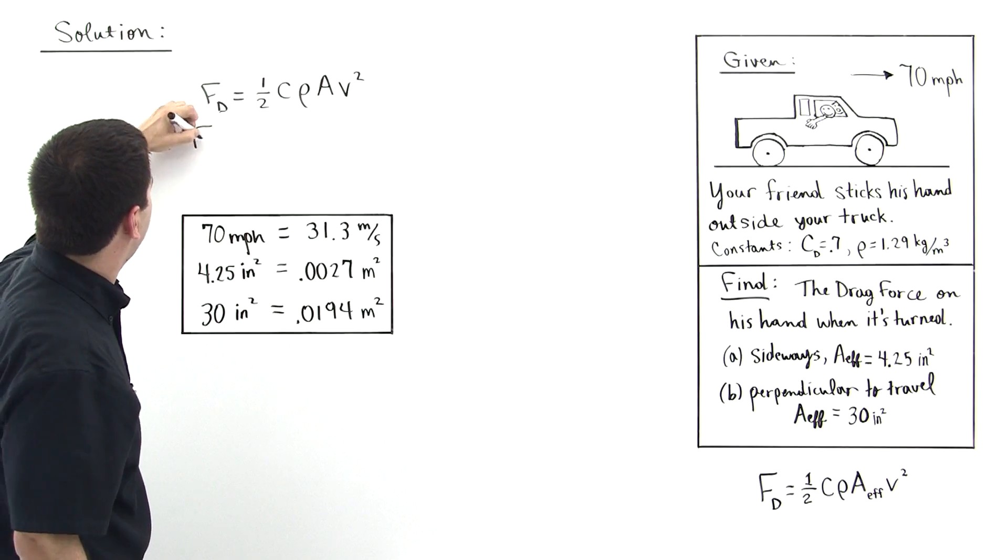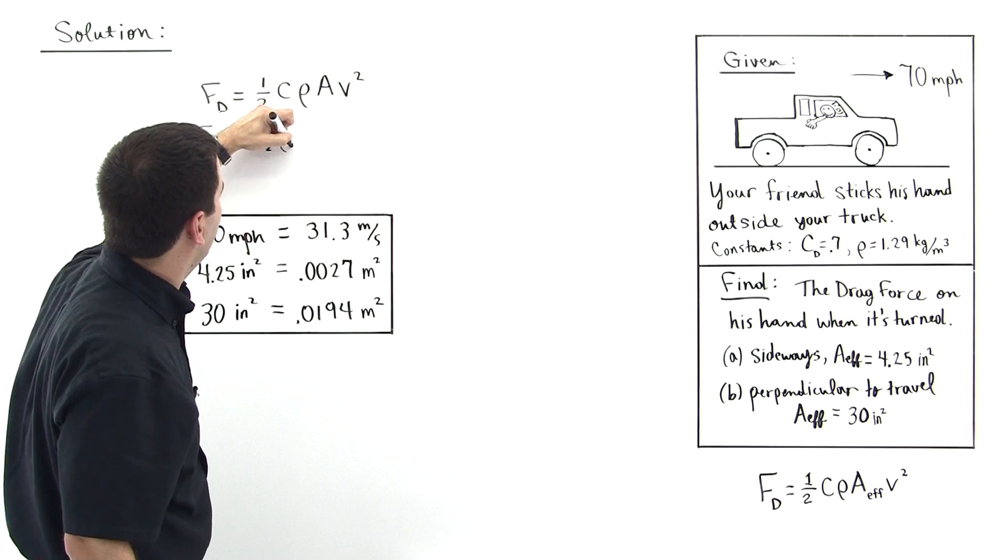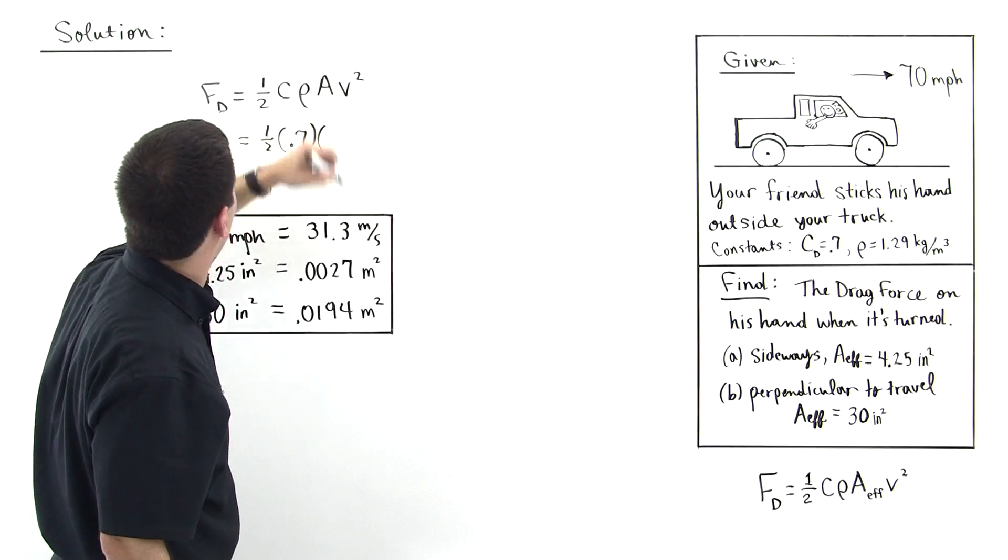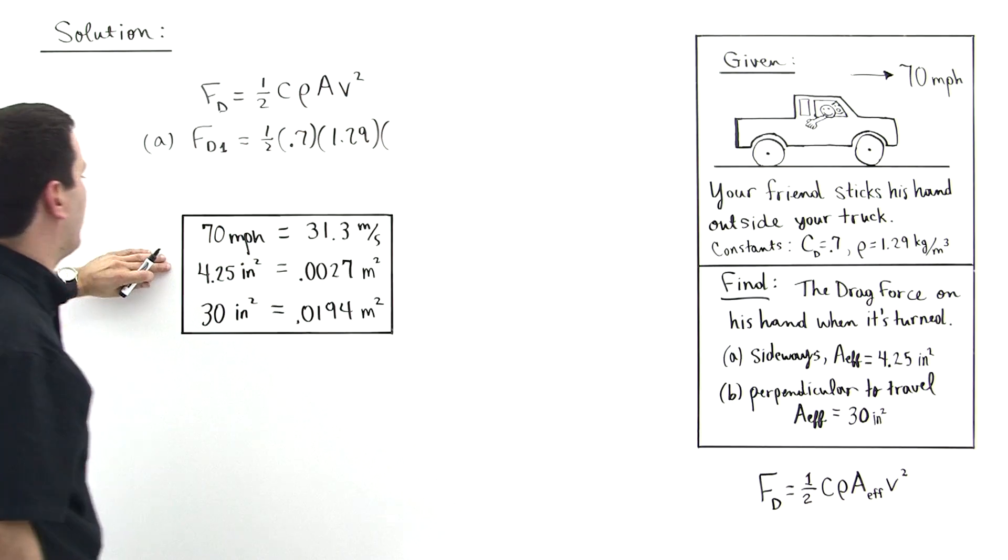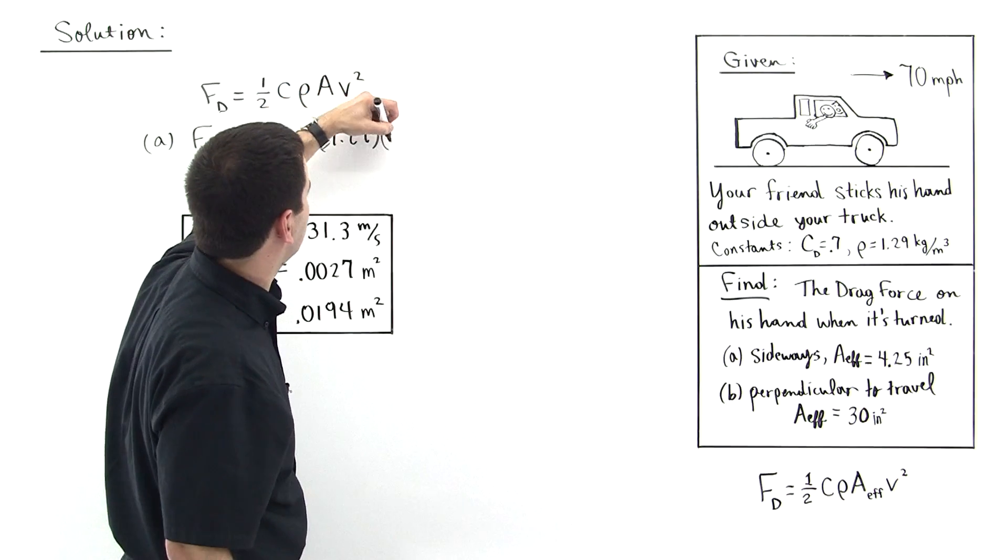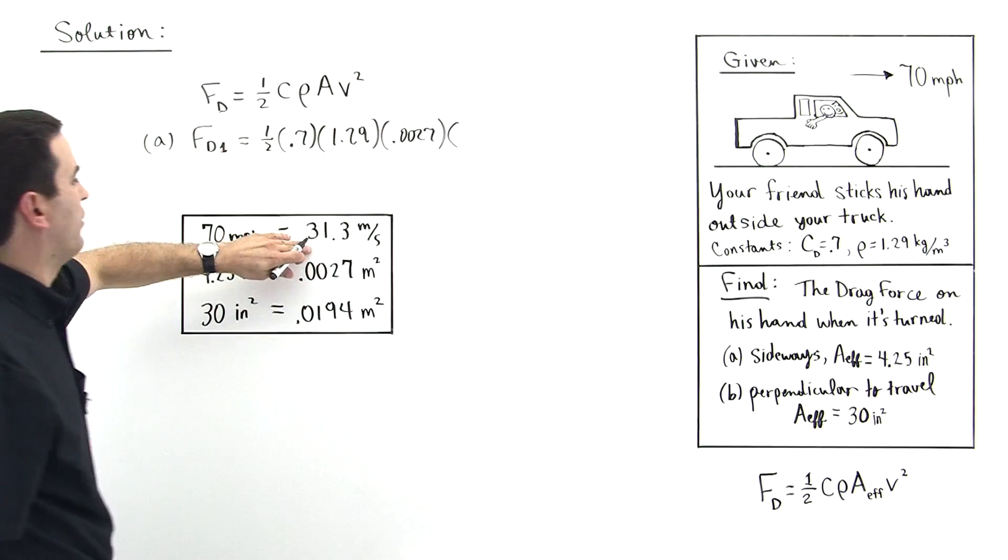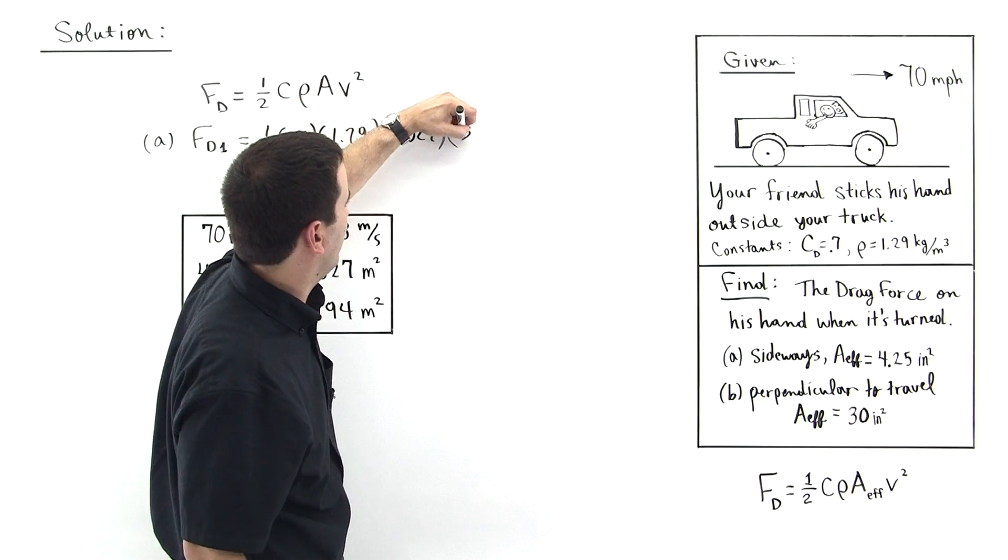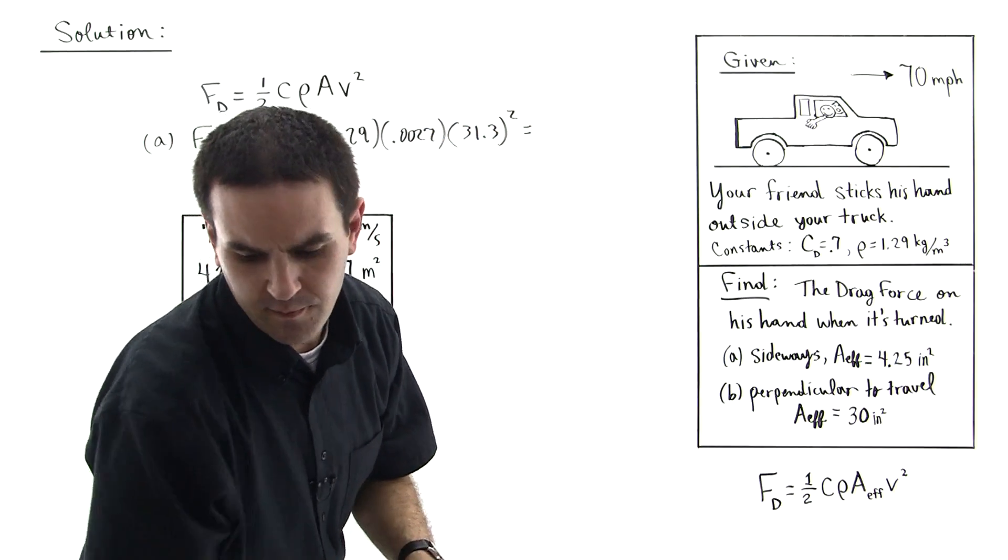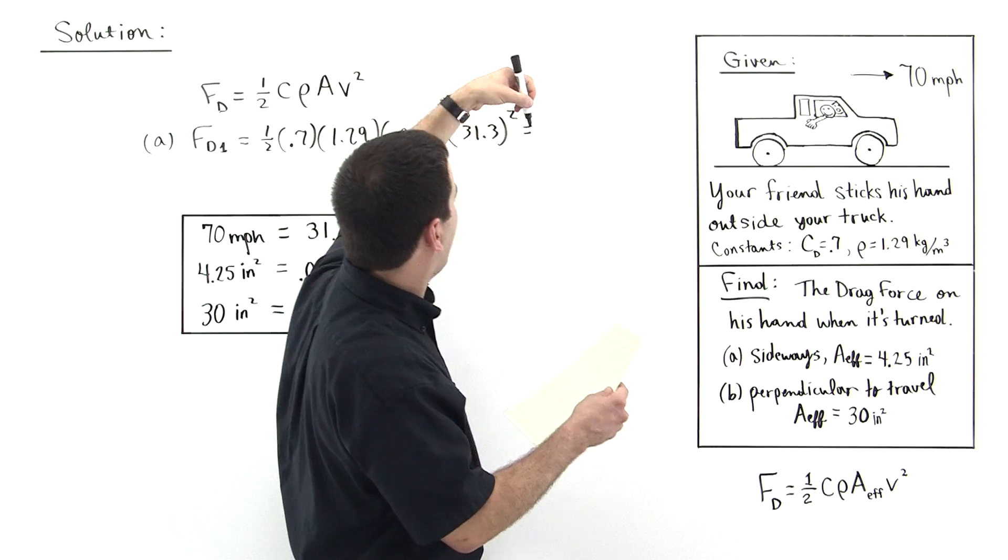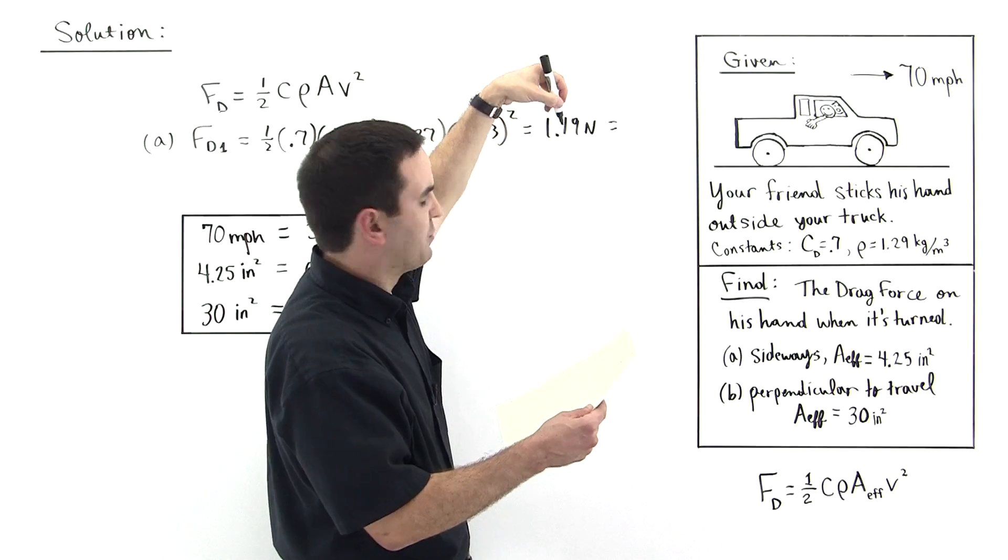So FD, and we'll call this FD1, is equal to one-half, C is 0.7, rho is 1.29. The area of the first one, 4.25 inches squared is this, 0.0027 meters squared. And then times the velocity squared, 31.3 meters per second squared, so 31.3 squared. We calculate and we will obtain 1.19 newtons, which is approximately equal to 0.27 pounds.